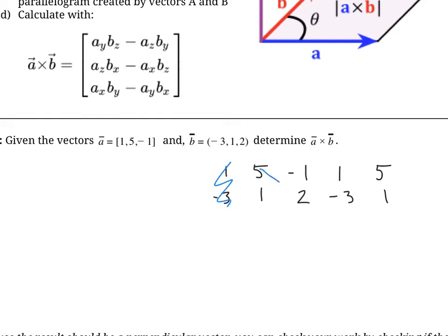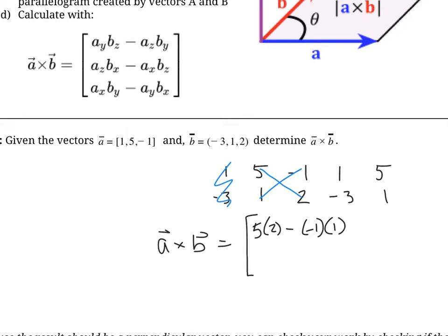What you're going to do is go diagonally. For the first component, it's five times two minus negative one times one. So I'll write this out: A cross B equals five times two minus negative one times one for the x component. All I did was go across and then back, subtracting in between — essentially taking the y and z components and subtracting the z of A times y of B.